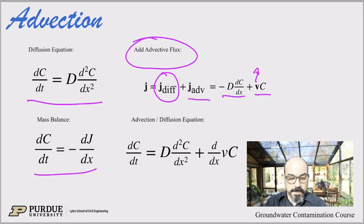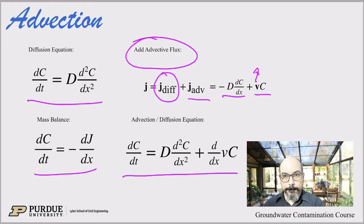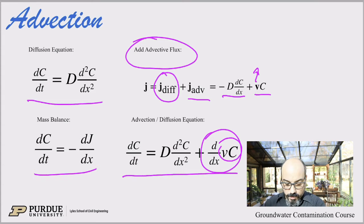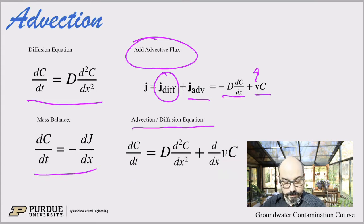This is really the advective flux. The mass balance definition was the change, the accumulation over time, is minus the flux. Same thing here with the advective flux. We just add the advective flux, so we have d/dx vC, where vC is the flux and d/dx is the mass balance equivalent. Now we have a new equation which is what we call the advection-diffusion equation, where the accumulation equals... actually this is a minus here, excuse me.